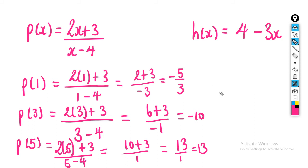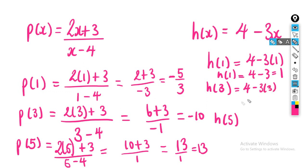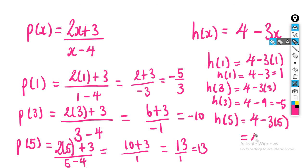Now let's do h(x) = 4 - 3x. For h(1): 4 minus 3 times 1 = 4 - 3 = 1. For h(3): 4 minus 3 times 3 = 4 - 9 = negative 5. And h(5): 4 minus 3 times 5 = 4 - 15 = negative 11.